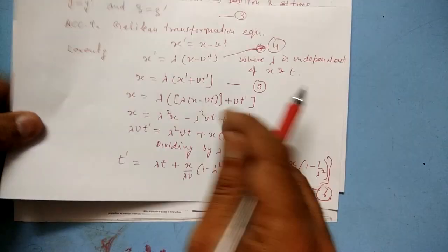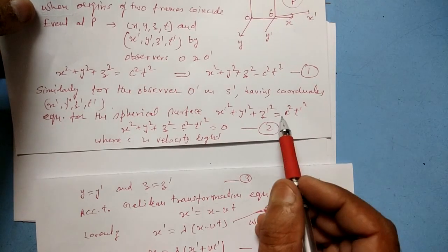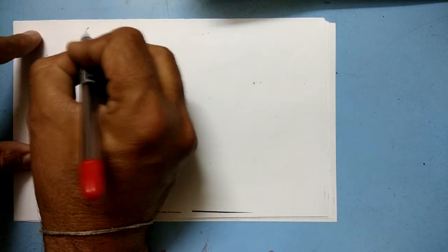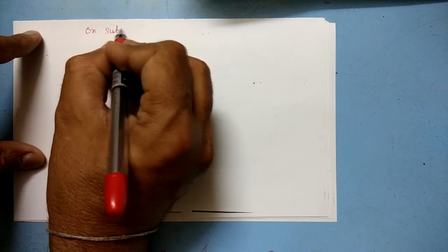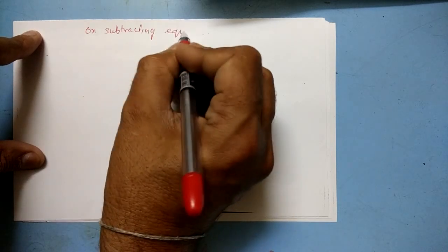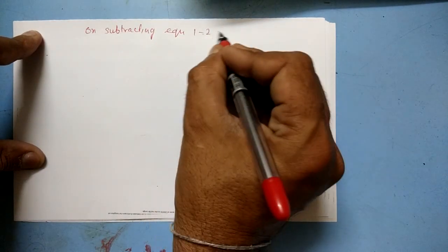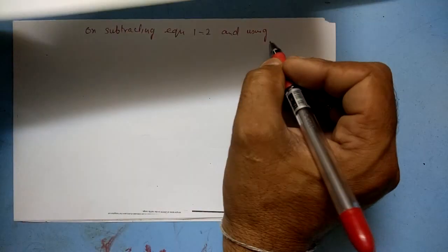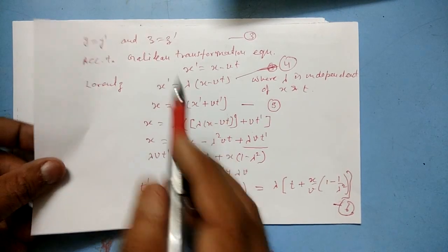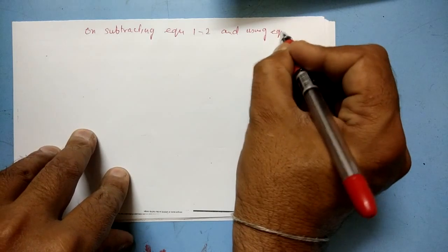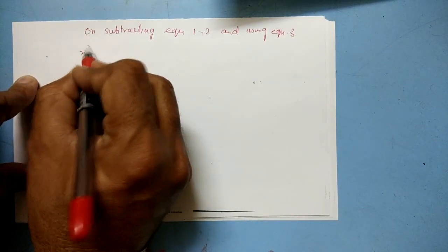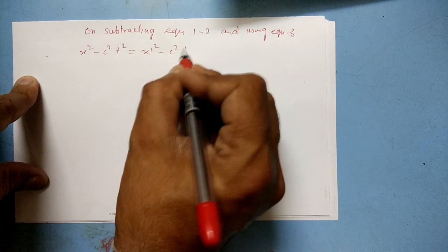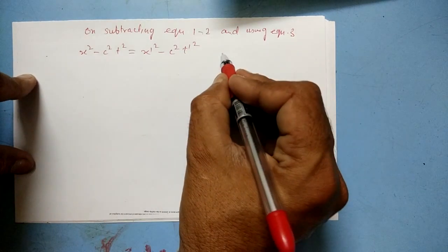Subtracting equation 1 from equation 2, and using the symmetry equation y = y' (equation 3), this gives x² - c²t² = x'² - c²t'², which we call equation number 6.